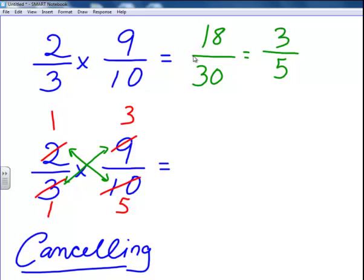So now we really have new numerators and new denominators. So let's multiply the new numerators together. 1 times 3 is 3. 1 times 5 is 5. We end up with the exact same answer, but without having to simplify at the end, because we simplified before we started multiplying. We cancelled out in this problem.